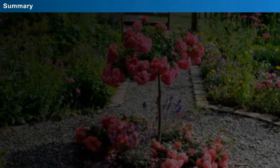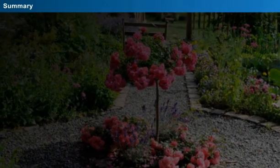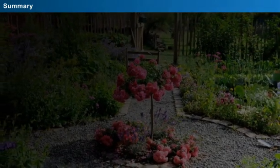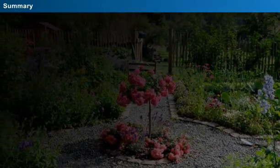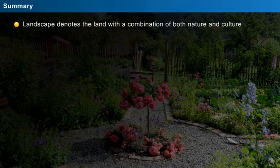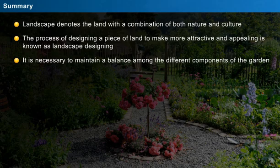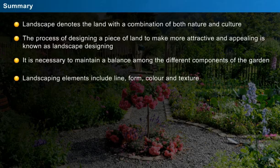Summary. That has been an interesting lesson about horticulture, landscaping and its principles. Let us do a recall of what we have studied. Landscape denotes the land with a combination of both nature and culture. The process of designing a piece of land to make it more attractive and appealing is known as landscape designing. It is necessary to maintain a balance among the different components of the garden. Landscaping elements include line, form, colour and texture.